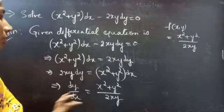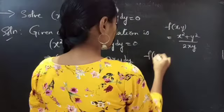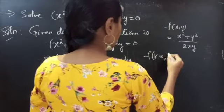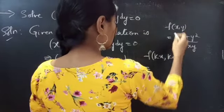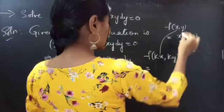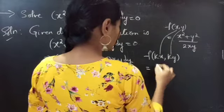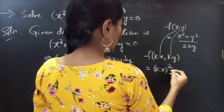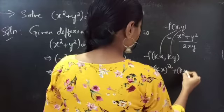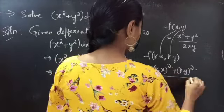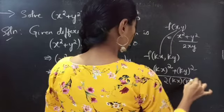We will check whether the function is homogeneous or not. For that, let's consider f(kx, ky). Now, replace x by kx and y by ky. This equals to kx whole squared plus ky whole squared by 2 into kx into ky.